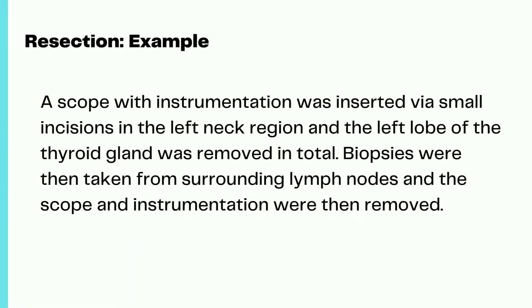Here is an example of coding resection procedures. A scope with instrumentation was inserted via small incisions in the left neck region, and the left lobe of the thyroid gland was removed in total. Biopsies were then taken from surrounding lymph nodes, and the scope and instrumentation were then removed. There are two procedures in this case.